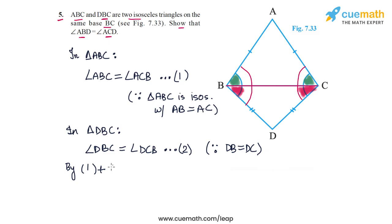By adding 1 and 2, on the LHS we get angle ABC plus angle DBC, and on the right side we get angle ACB plus angle DCB. Now angle ABC plus angle DBC on the left side is this whole angle ABD, so we get angle ABD on the left side. On the right side we get angle ACB plus angle DCB, so we get the whole angle ACD.